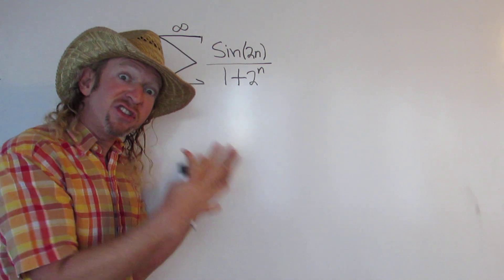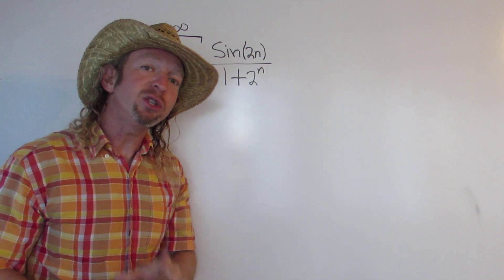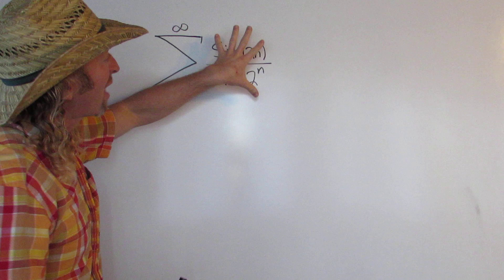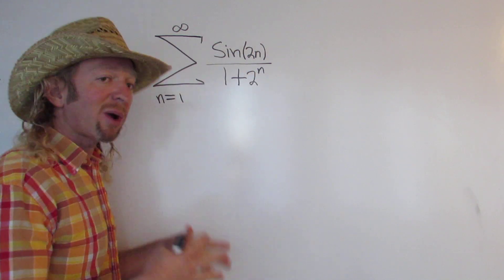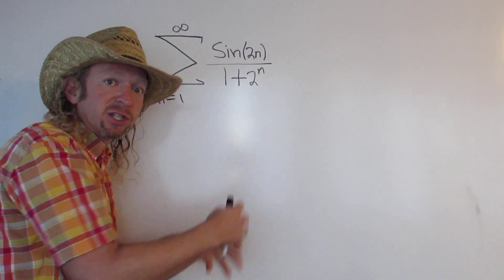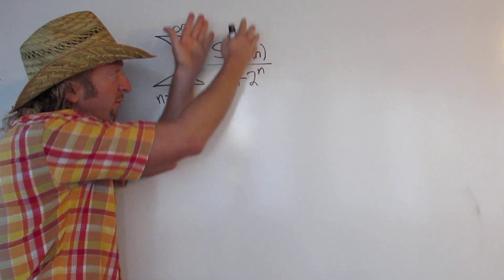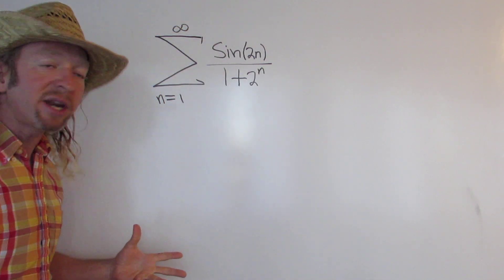So what we're going to do is we're going to compare this series to a geometric series. Now, keep in mind you can only use the direct comparison test when you have positive terms in your series. So what we will do is we will show absolute convergence. So we'll take the absolute value of this and we'll show if the series converges. Therefore, if the absolute value converges, it also converges in the regular sense. So let's go ahead and do it.